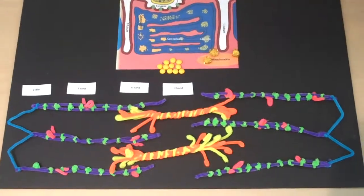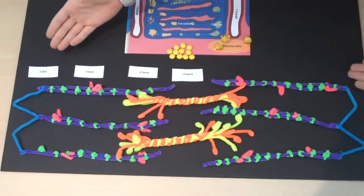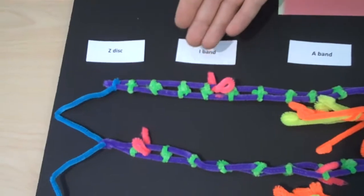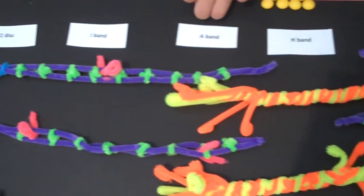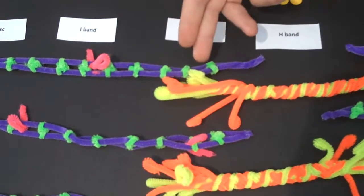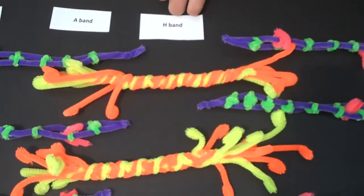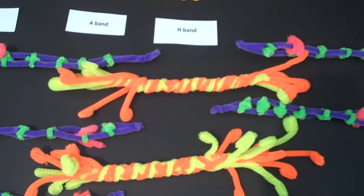Here we have a sarcomere from Z-disc to Z-disc. Here indicates the I-band with only thin filaments. Moving down the sarcomere, we have the A-band lining up both thin and thick filaments. Moving to the center, we have the H-band with only thick myosin filaments.